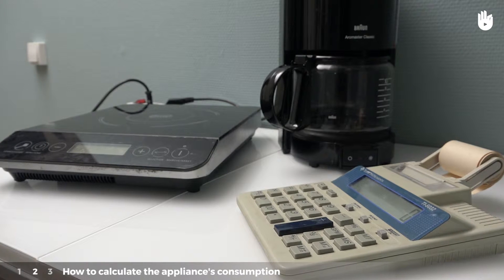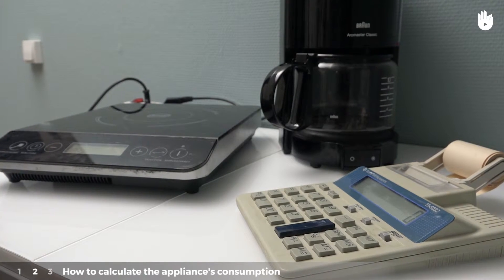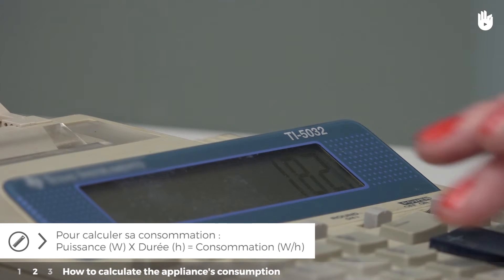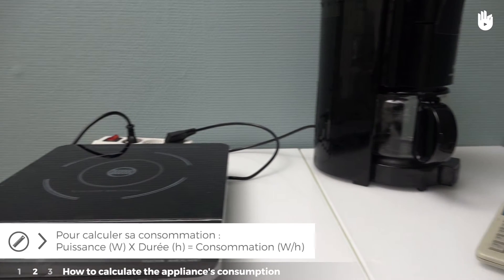Step 2. How to calculate the appliance's consumption? Use the appliance's wattage multiplied by the time it functions in hours per day or per year to obtain the consumption in watt hours by day or by year.